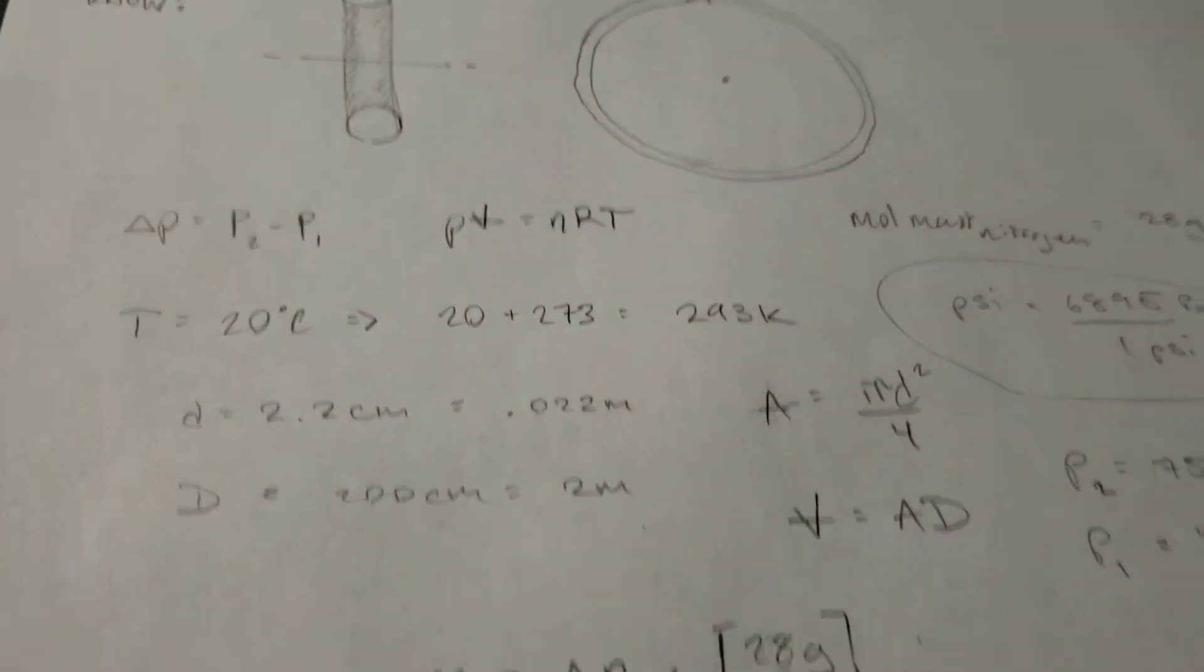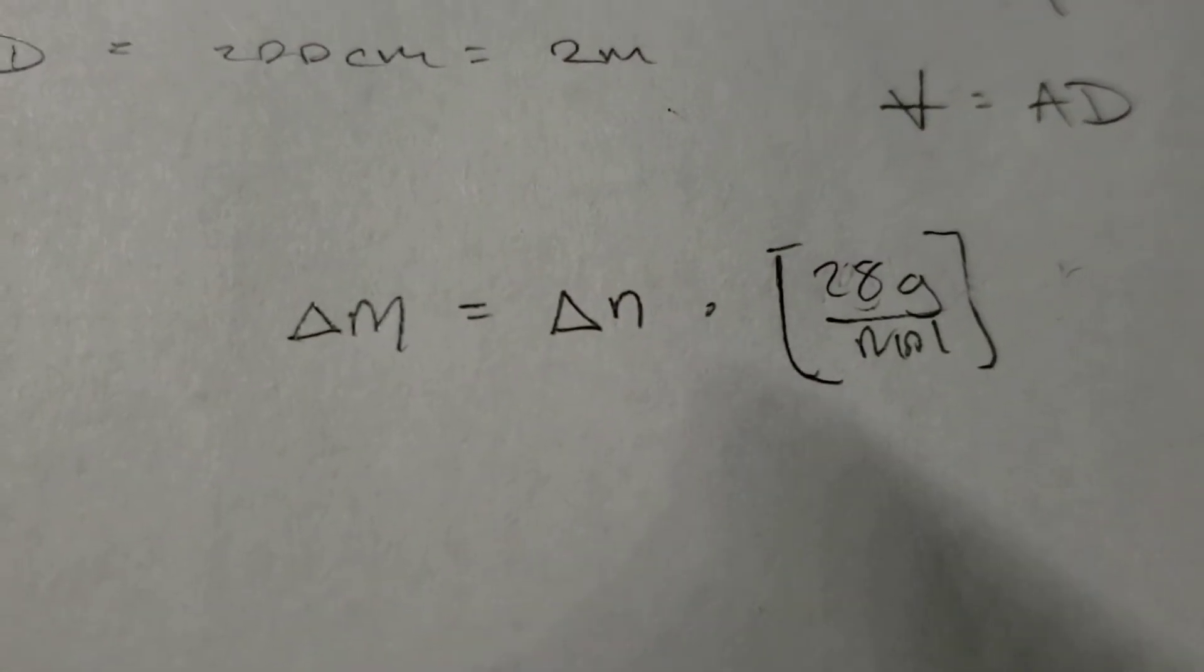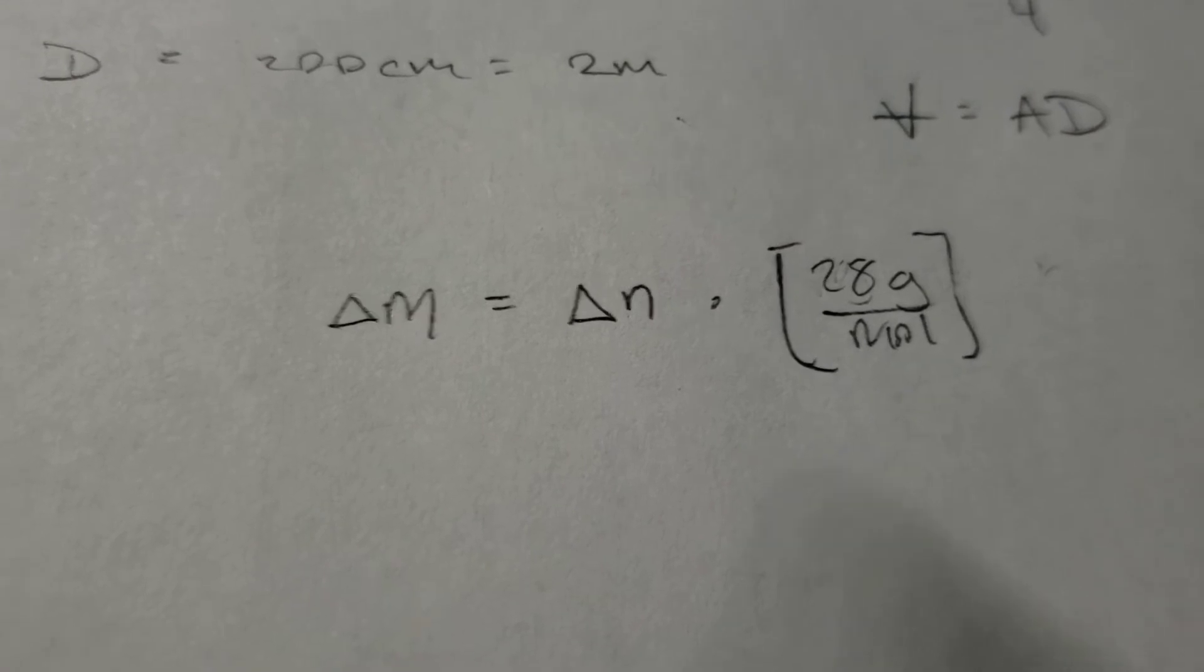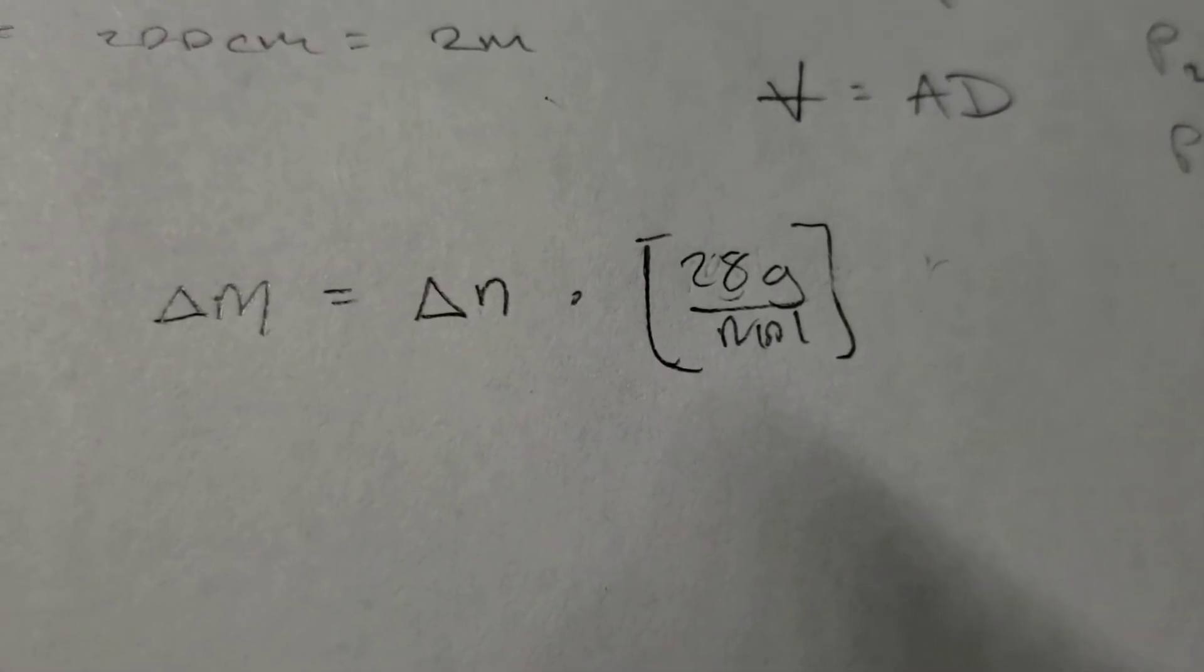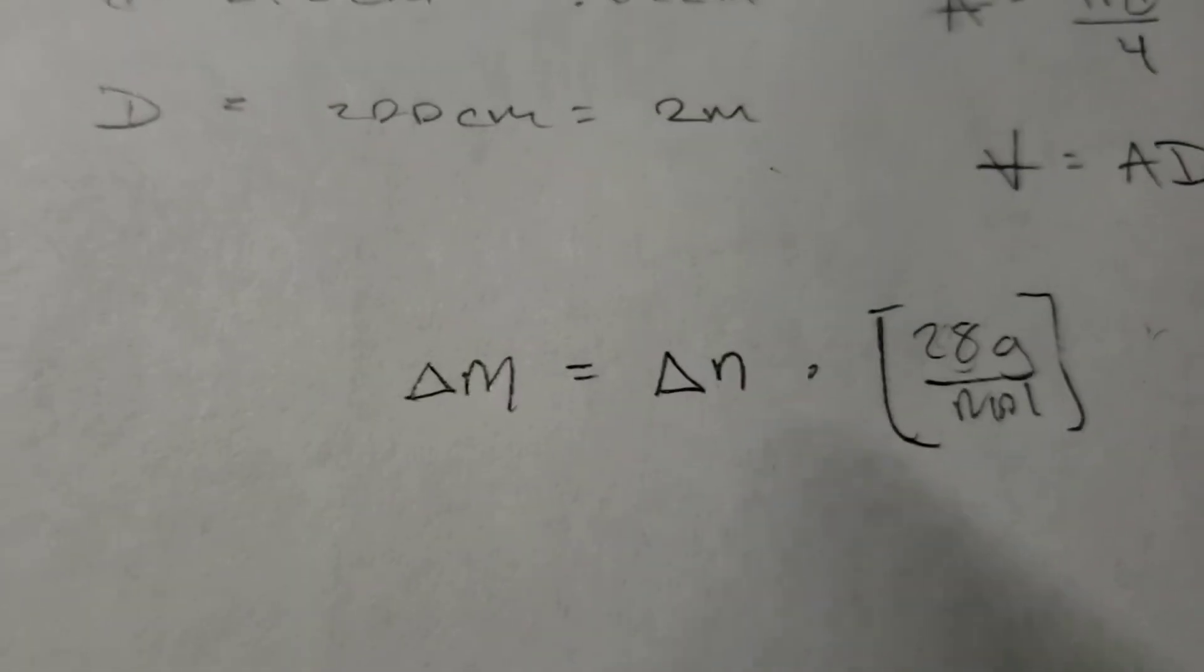So, basically, how we're going to go about this problem as a whole is we're going to solve for the change in moles, actually, as opposed to the change in mass. And then we're going to take that change in moles and then multiply it by the molar mass of nitrogen, which is 28 grams per mole. And that will give us the change in mass or the answer that we're looking for.